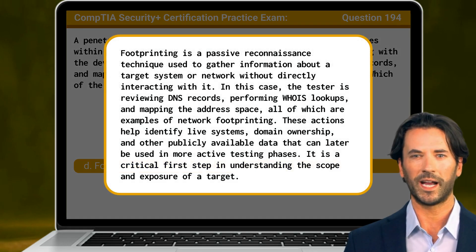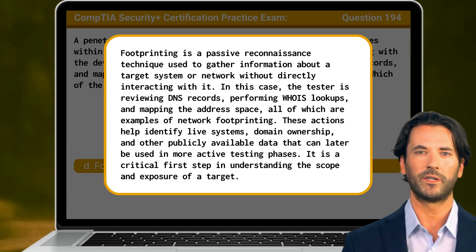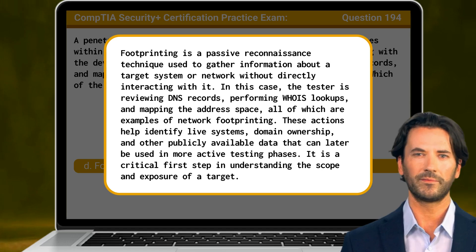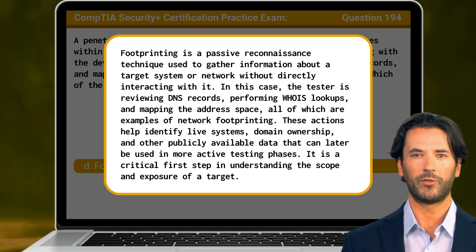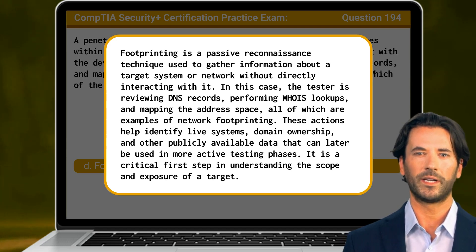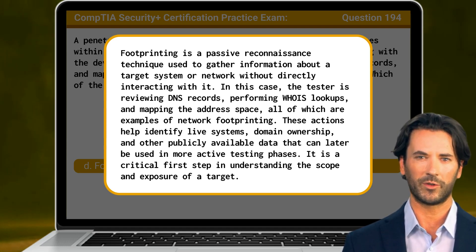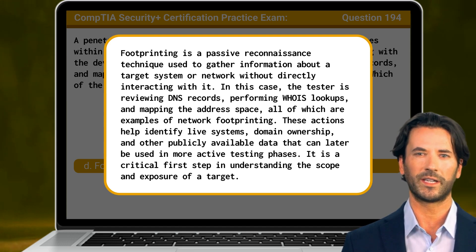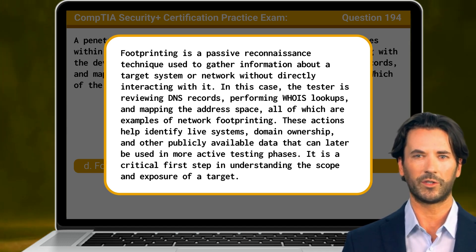Footprinting is a passive reconnaissance technique used to gather information about a target system or network without directly interacting with it. In this case, the tester is reviewing DNS records, performing WHOIS lookups, and mapping the address space — all examples of network footprinting. These actions help identify live systems, domain ownership, and other publicly available data that can later be used in more active testing phases. It is a critical first step in understanding the scope and exposure of a target.